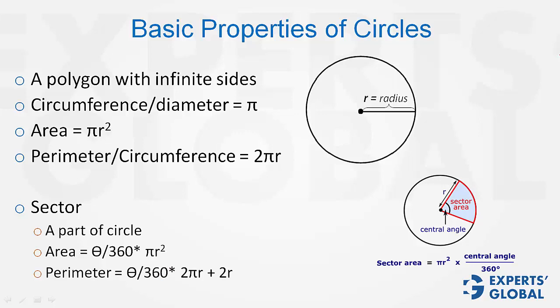Perimeter is theta upon 360, 2 pi r plus 2 r. Please don't remember 2 r because sector also has two radii involved. Theta upon 360, 2 pi r is perimeter of just the arc, not the entire sector.